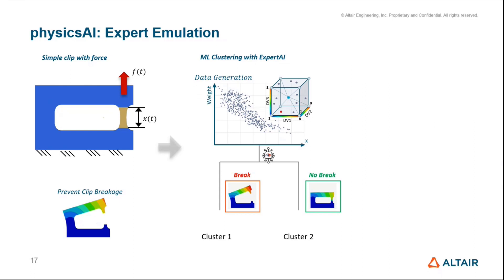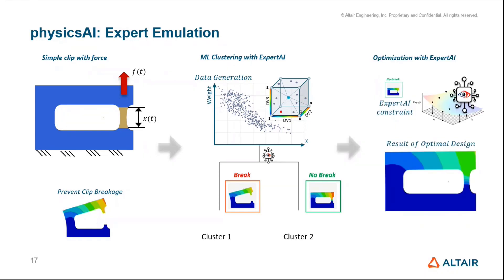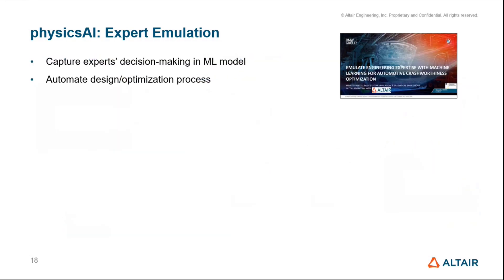That's where the expert comes in. The user looks at the clusters, visualizes them, and sees that one set breaks and one doesn't — cluster two is desirable, cluster one is not. We can then leverage that information in an optimization: minimize mass but constrain the optimization so the result falls into the 'don't break' cluster number two. That's an illustrative example of a typical process.